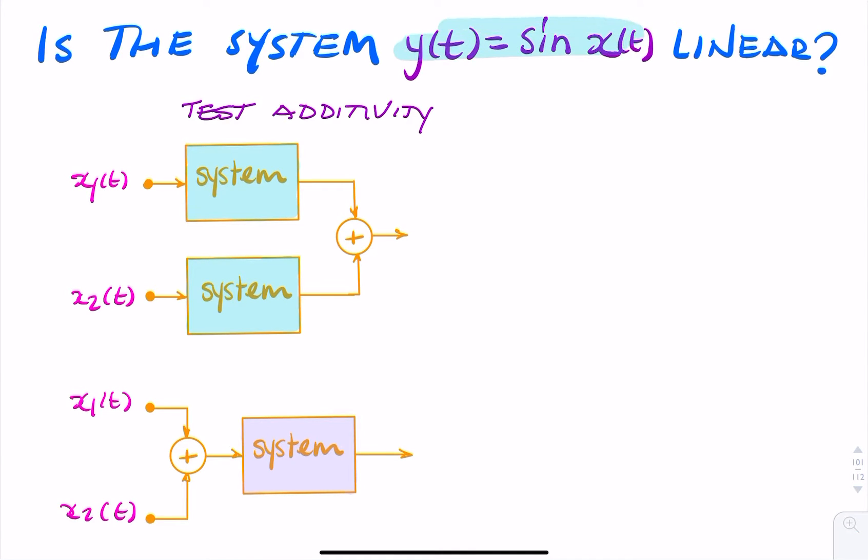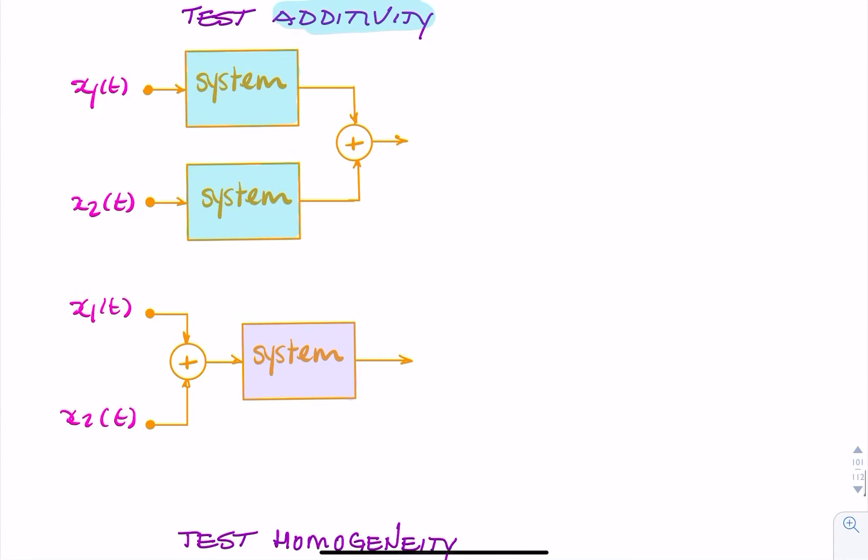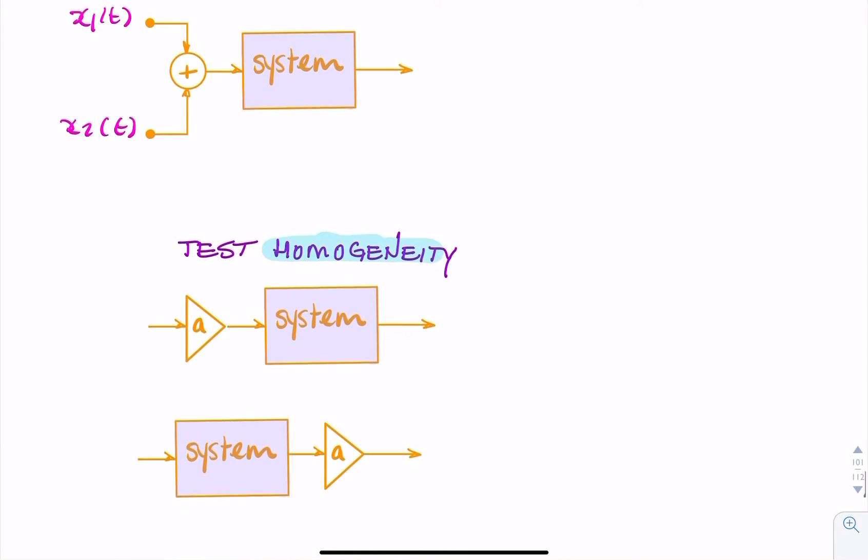Here we have a system y(t) = sin(x(t)) and we want to test if it's a linear system. To do that test, we test for additivity, then we test for homogeneity.